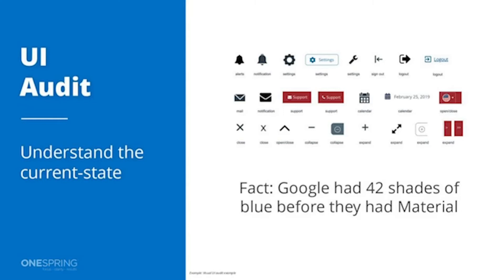In this example, you can see there are three different implementations for settings in terms of a gear and a wrench, the use of a bell where in one case it means alerts and in another it's a notification, different variations of sign out and log out, and even four different ways to expand.